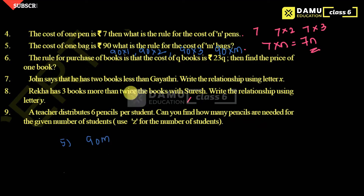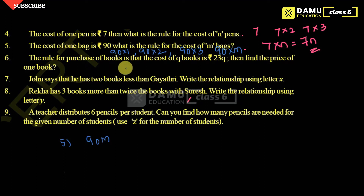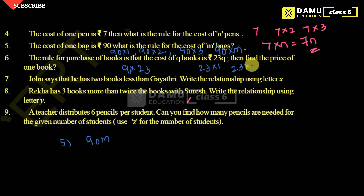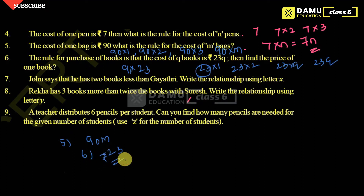Question six: the rule for the purchase of books is that the cost of q books is 23q. Find the price of one book. So q books cost 23q, meaning each book costs 23 rupees. One book is 23, two books is 23×2, and so on — q books gives 23q. Therefore the cost of each book is 23 rupees.